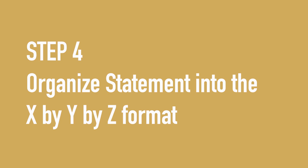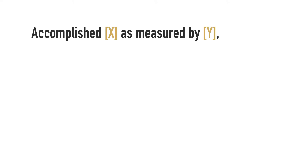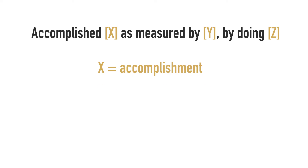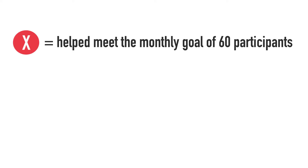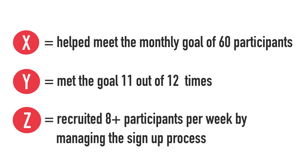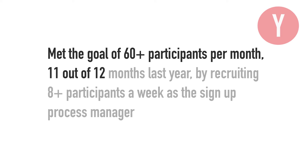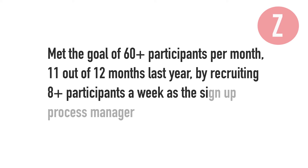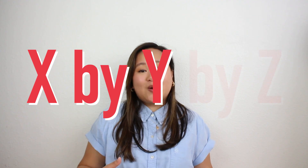Step four is to organize your impact statements using the X by Y by Z format. It looks like this: 'Accomplished X as measured by Y by doing Z.' X is the accomplishment, Y is the measurable result, and Z is how you did it. My X would be that I helped meet the monthly goal of 60 plus participants. My Y would be that we met that goal 11 out of 12 times, and my Z would be that I recruited 8 plus participants per week by managing the sign-up process. Putting it all together: 'Met the goal of 60 plus participants per month 11 out of 12 months last year by recruiting 8 plus participants a week as the sign-up process manager.' This now sounds so much more impressive than where I started. Using the X by Y by Z formula will help hiring managers see right away what impact you've made.